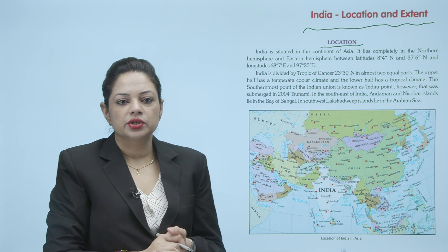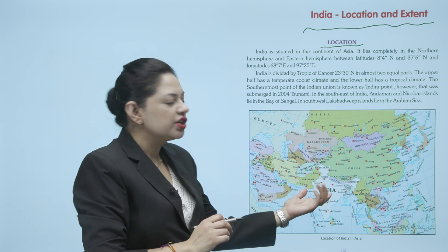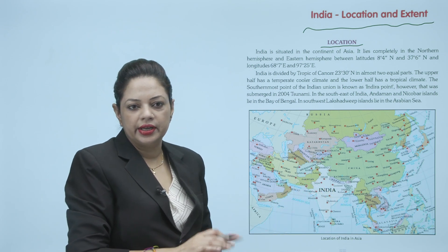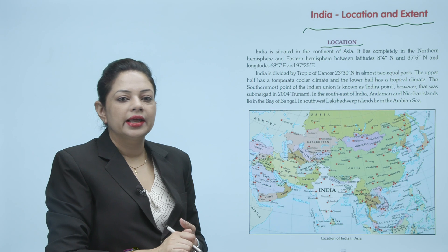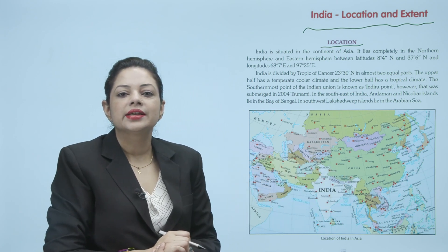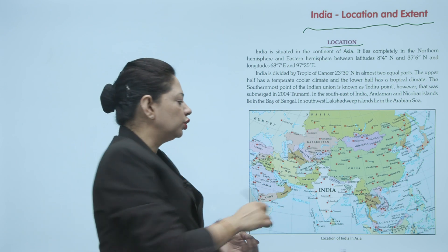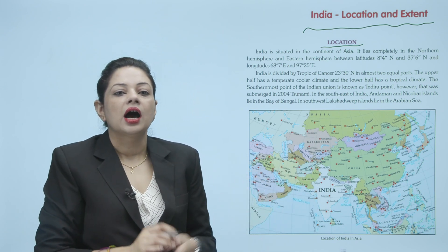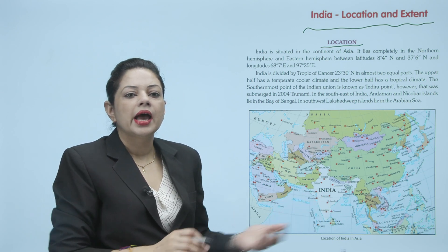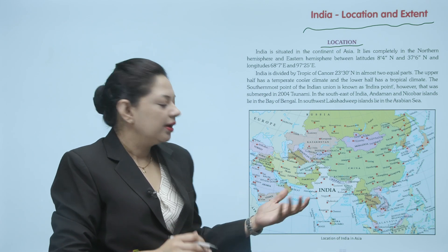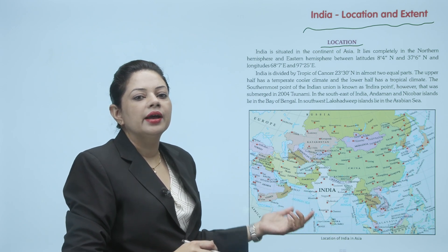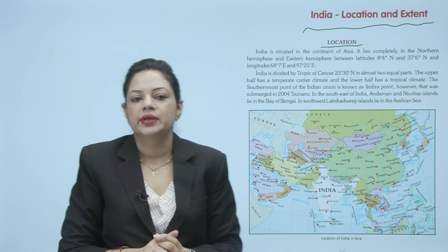Ab explanation karte hain. India kahan located hai? India Asia mein located hai. Eastern hemisphere aur northern hemisphere mein located hai. Aur India ko ek line divide karti hai, that is Tropic of Cancer, jo India ko pass out karti hai aur do equal parts mein divide karti hai — ek aapka cooler climate mein aur lower aapka tropical climate mein. Aur India ke paas kya hai? Bay of Bengal mein do islands hain aur ek island hai aapka Lakshadweep Island Arabian Sea mein.